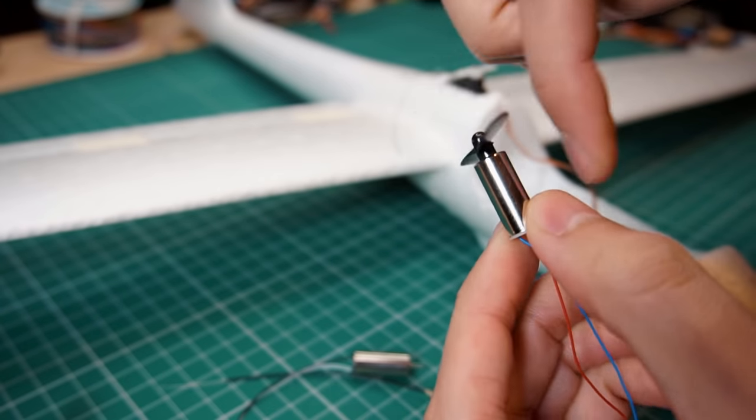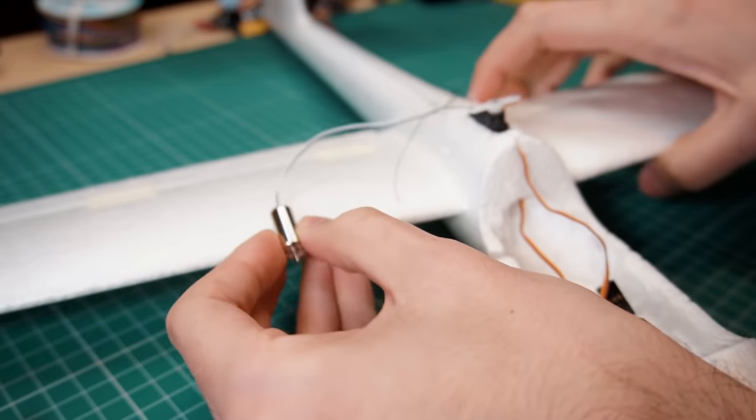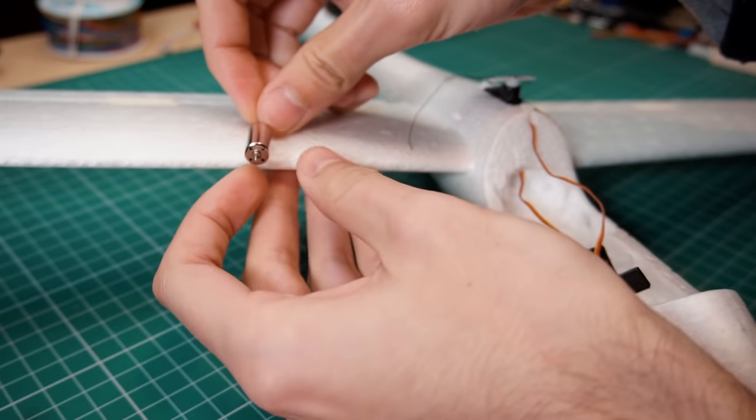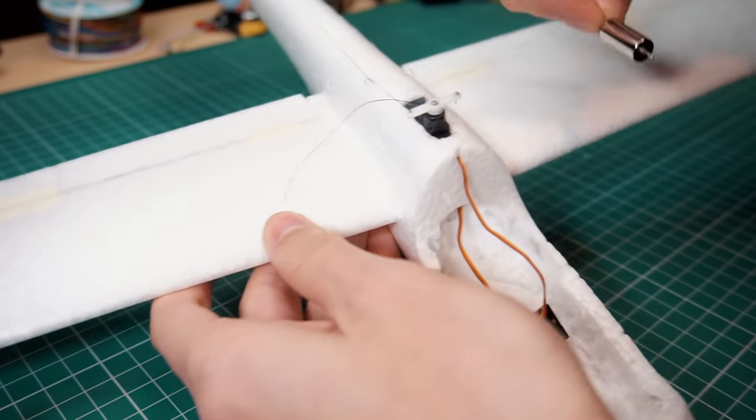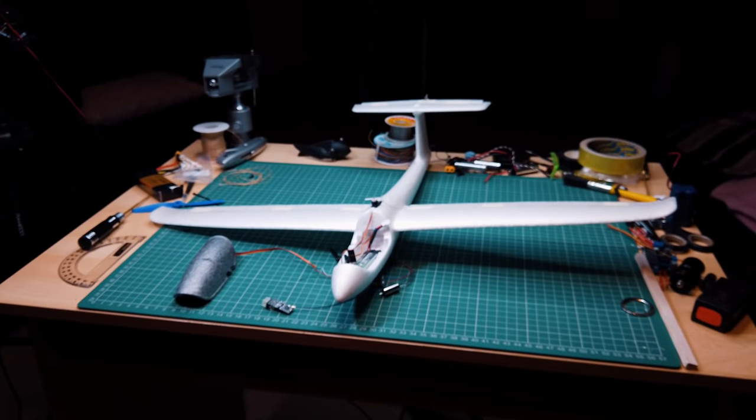We're going to use micro brushed motors as a propulsion system for our airplane. These motors are mainly used for micro drones and you can buy them for cheap from an online hobby store. We're going to use two of them and put them on the wings. It's going to be just like a twin engine airplane.